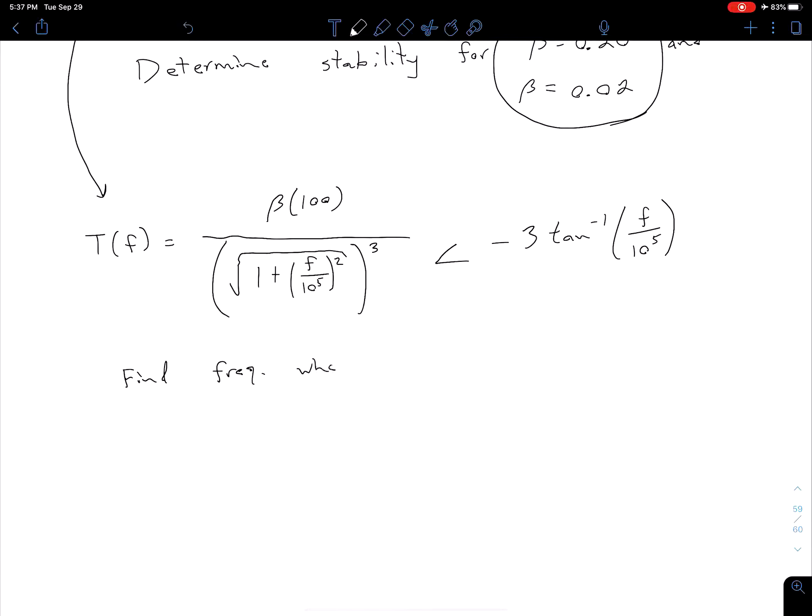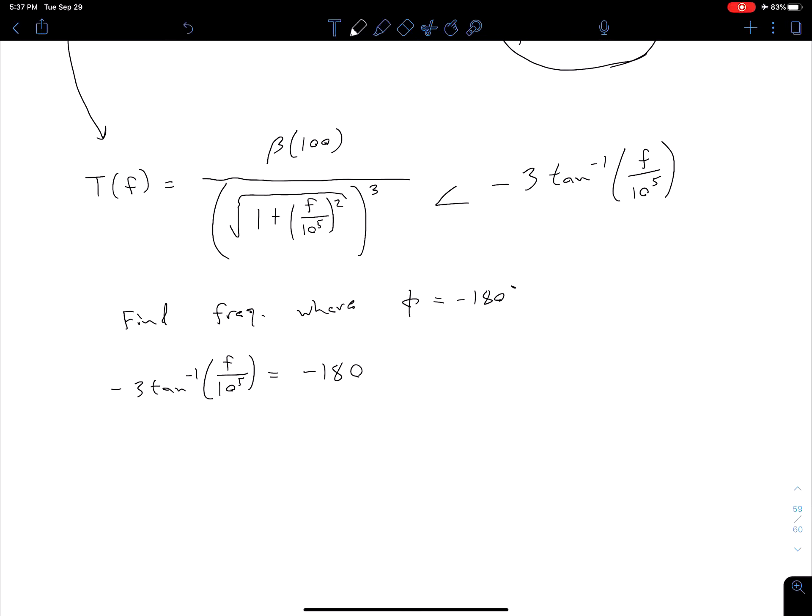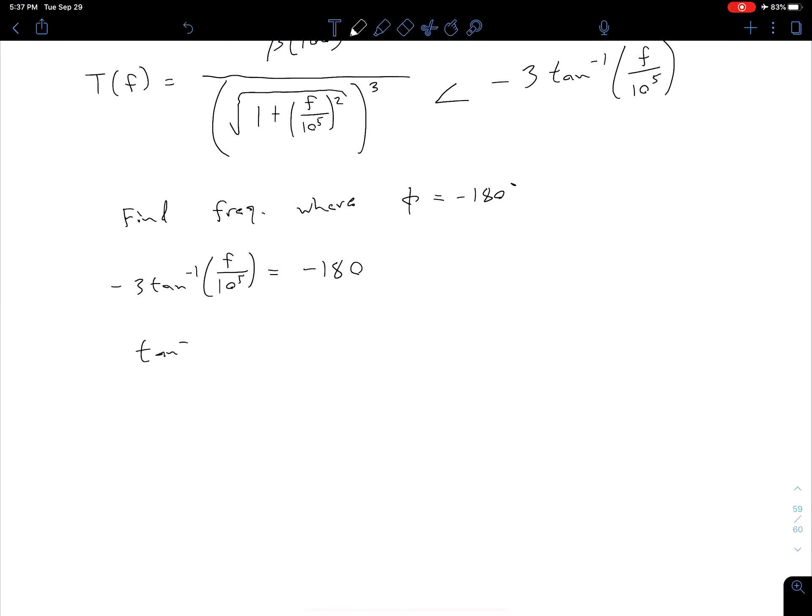In order to do that we can say we have negative three tan inverse tan of f over 10 to the fifth is equal to negative 180. Dividing the negative three on both sides we then have inverse tangent of f over 10 to the fifth is equal to 60. So our frequency then at 180 is equal to 10 to the fifth times tangent of 60 degrees which is going to give us a value of our 180 degree frequency of approximately 173 kilohertz.